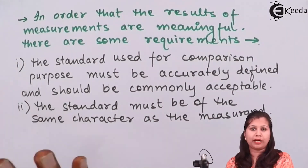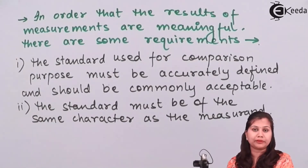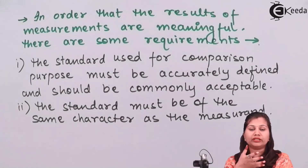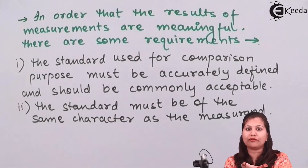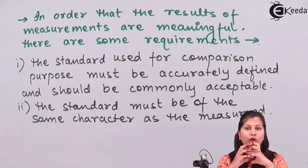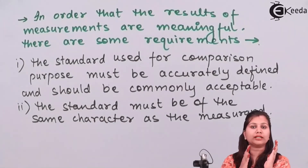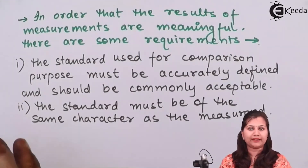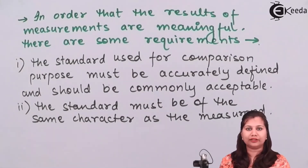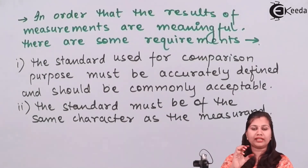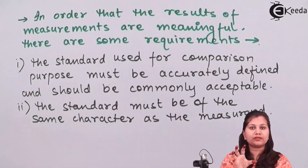The first requirement is that the standard used for comparison must be accurately known and commonly acceptable by all. For example, when measuring the weight of an unknown quantity by comparing it with a 1 kg standard, the weight of that standard must be exactly 1 kg. If it is 98 or 99 grams off, it cannot be used as a standard. The standard must be accurate and universally accepted by all persons doing the measurement.